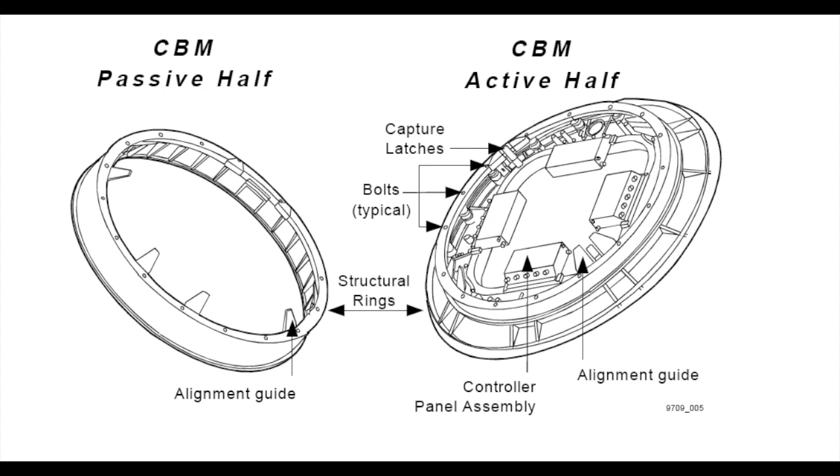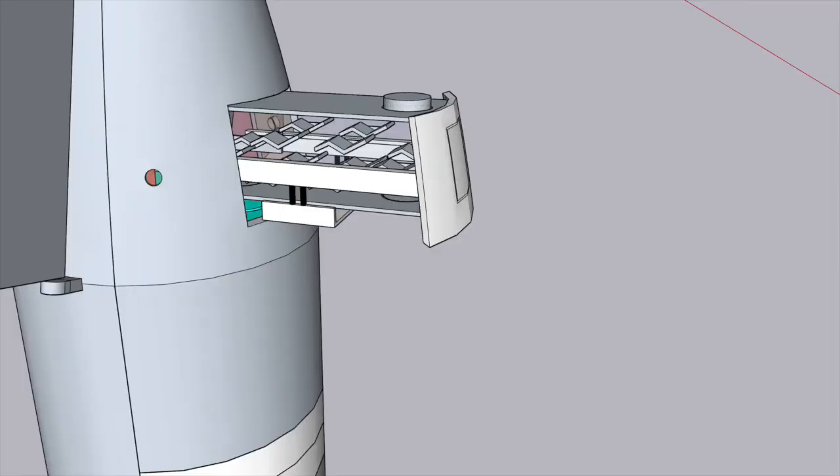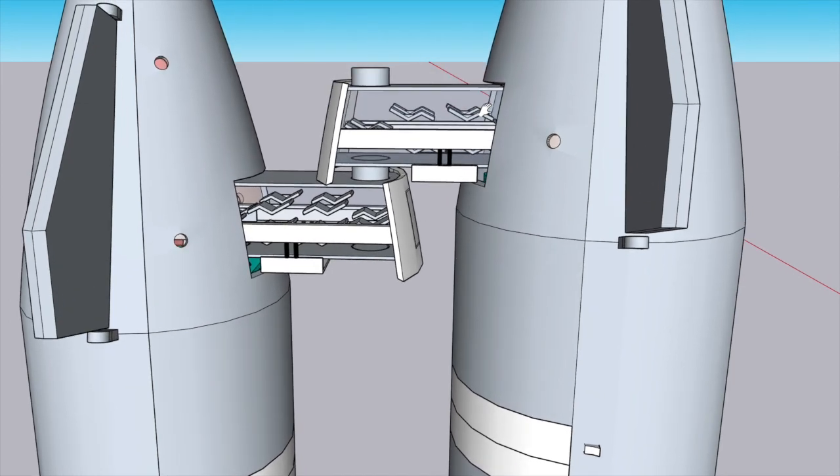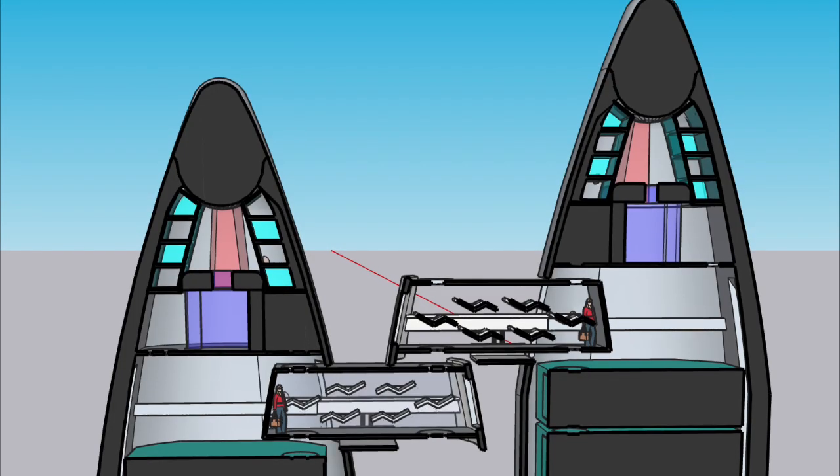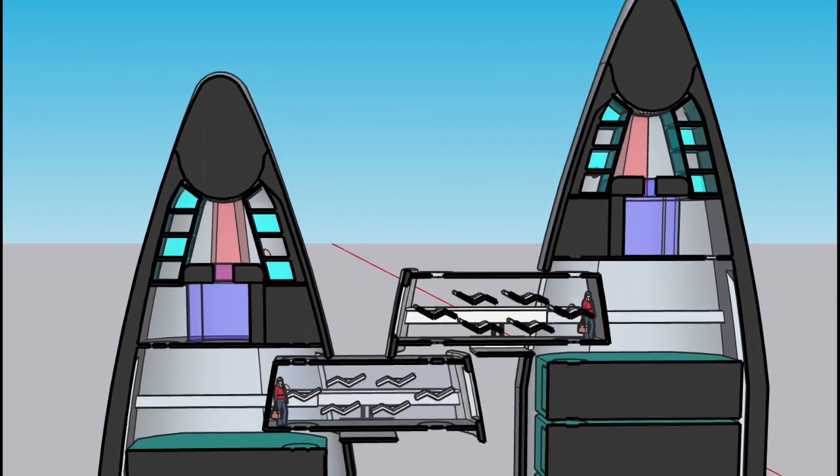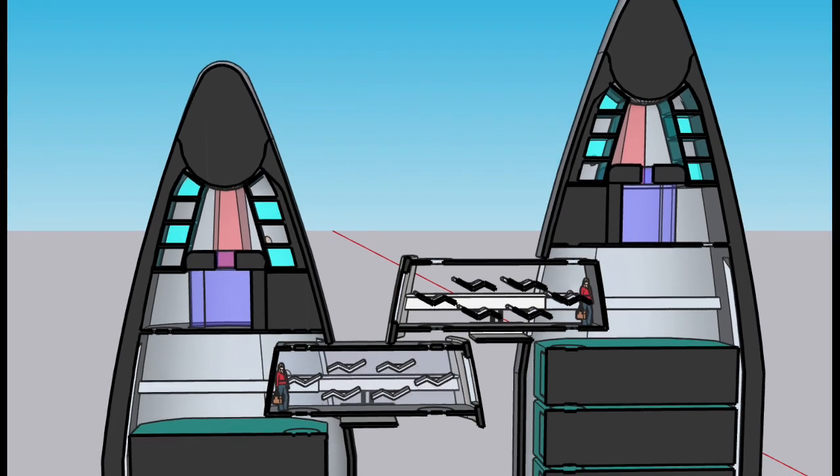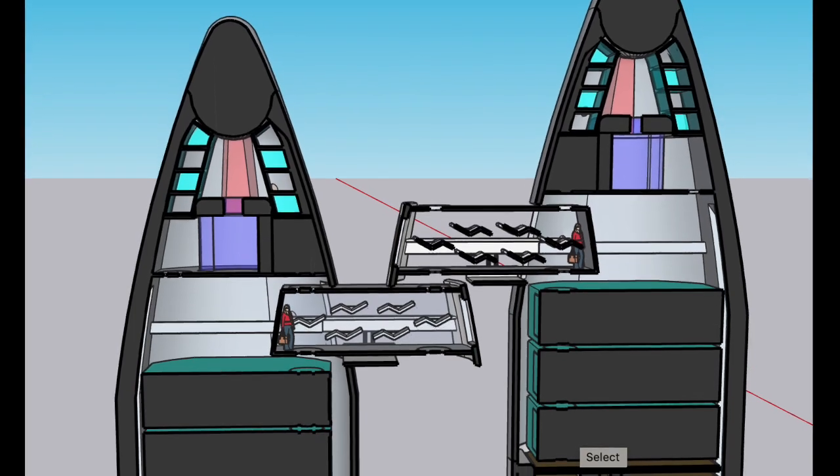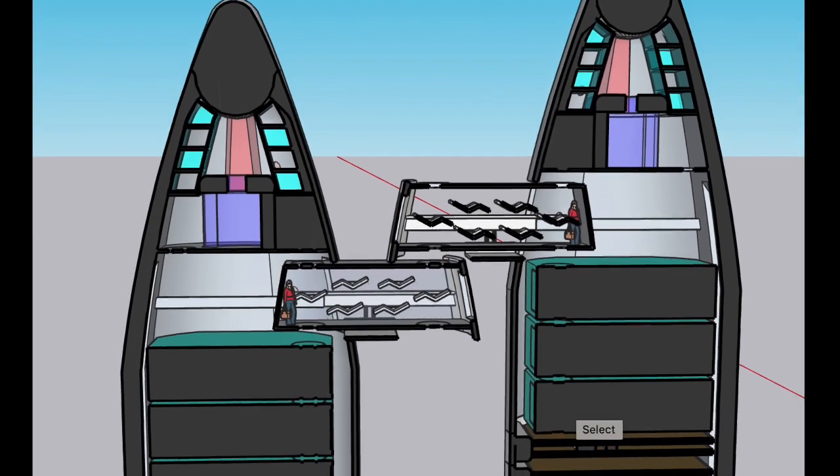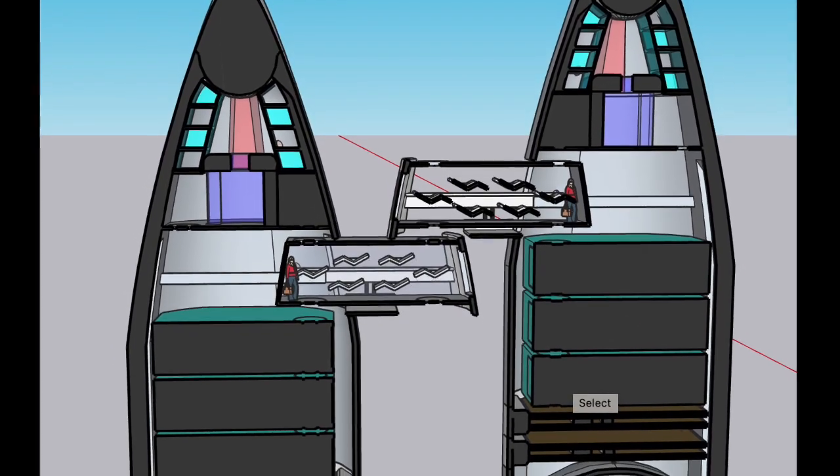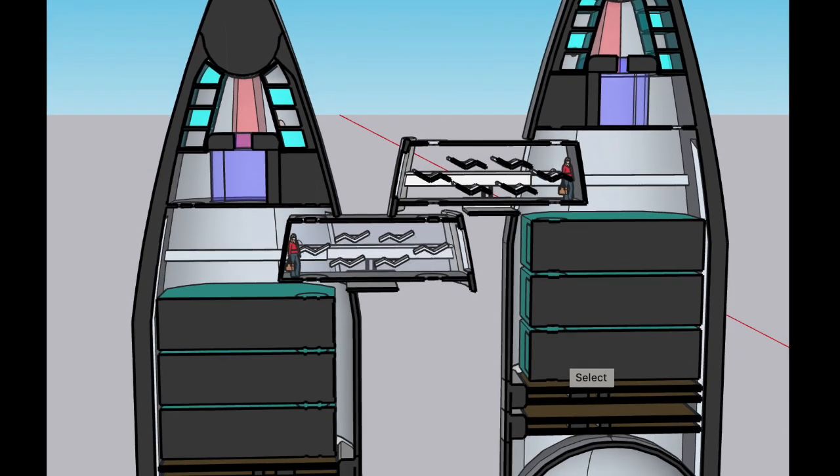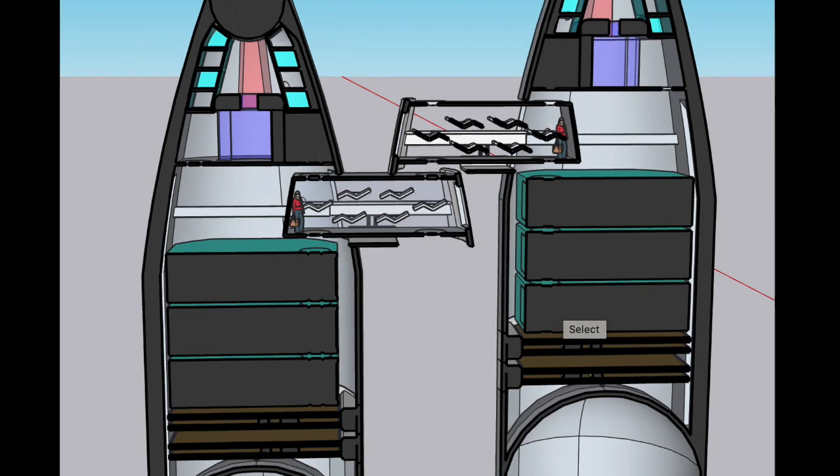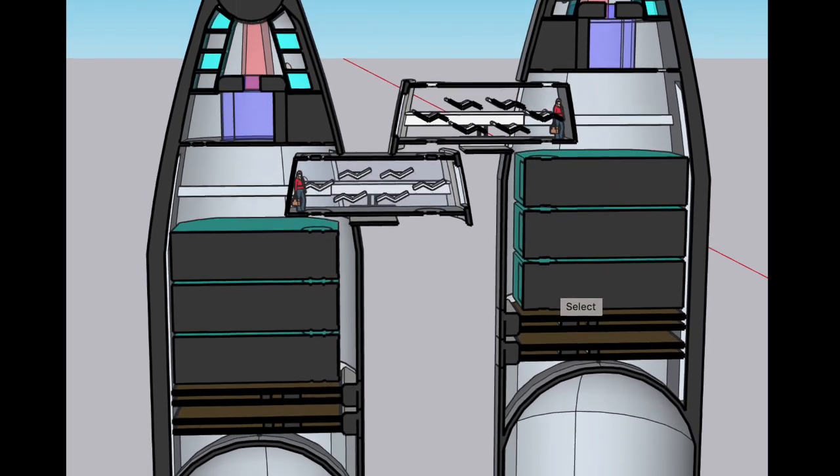So that's why this airlock module has four CBMs, two pairs of active and passive halves. So you'll see in this cross-section that I've extended this design choice, active half facing up, passive half facing down, not only to the airlock modules, but also to the cargo modules. So that means that the cargo modules are able to be accessed during cruise to Moon or Mars and able to be stacked once they're on the surface.